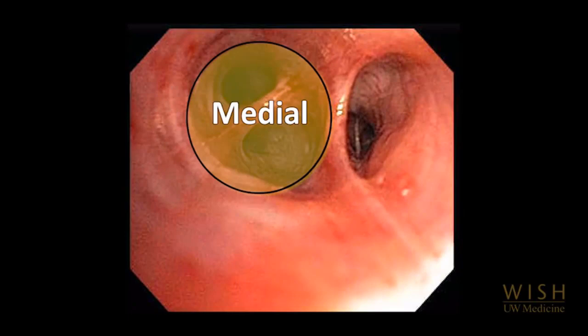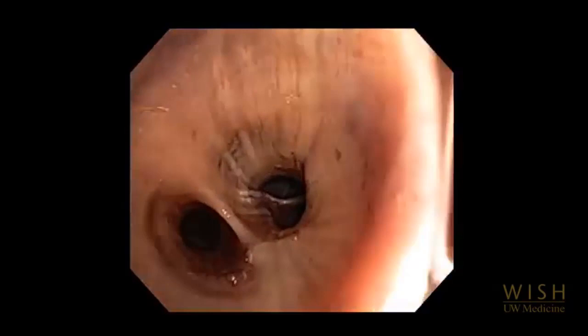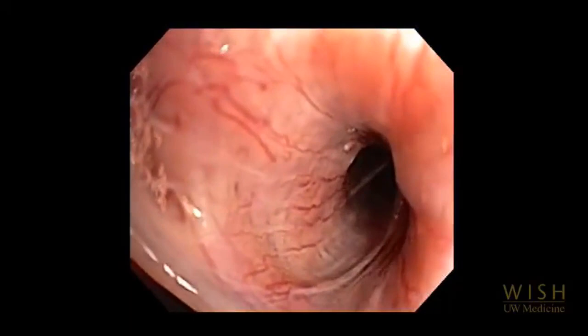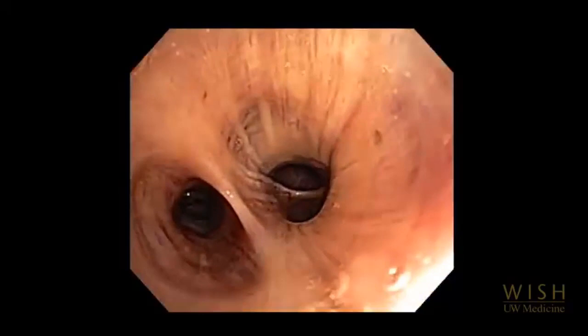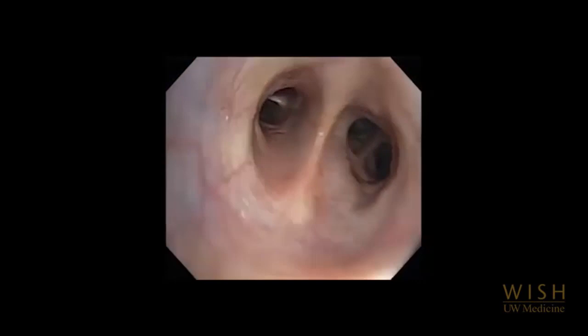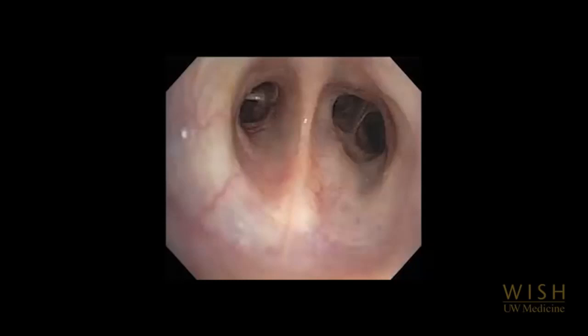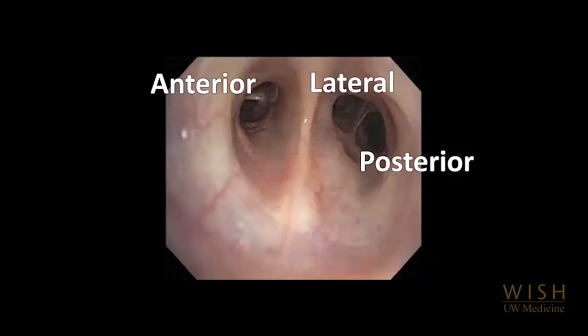The right middle lobe has two segments — medial and lateral. We then inspect the superior segment, and then the medial basal segment. We are continuing our anatomy demonstration in a different patient, where inspection of the right medial basal segment has just been completed. We now see how the right lower lobe bronchus divides into the remaining basilar segmental bronchi — anterior, lateral and posterior. These are typically in a row when the bronchoscope is held in an anterior-posterior orientation within the right lower lobe bronchus, forming the familiar ALP mnemonic.